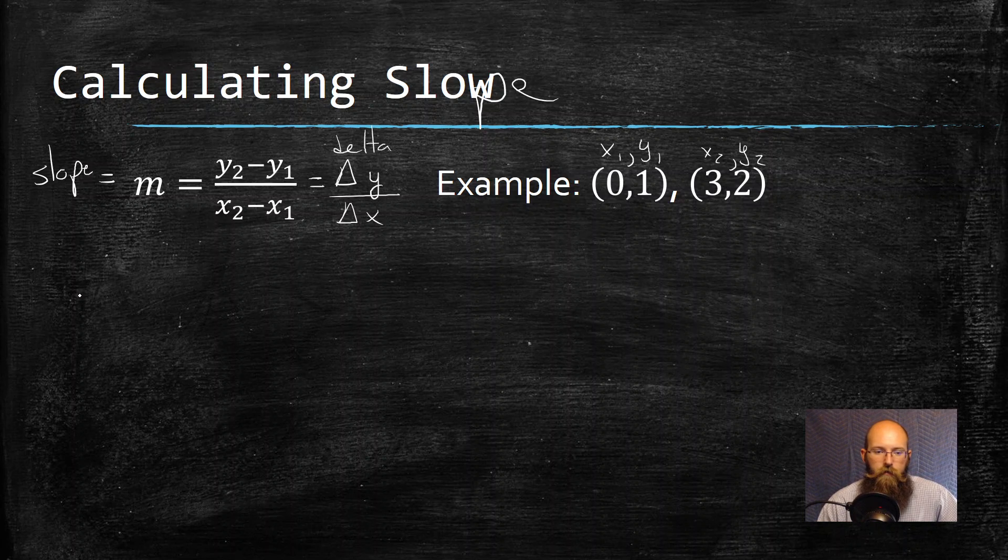Now I need to subtract those things. So my m equals, and I always write out my formula. I always just write it down again. And my y2, that's two.